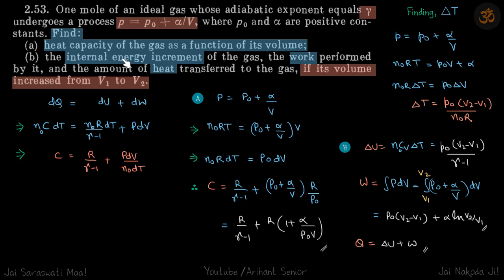Internal energy is a state function, so ΔT will work for us. The change in internal energy is n₀·Cv·ΔT. However, ΔT is not given directly — V1 and V2 are given — so we need to get a relation between temperature and volume to find the change in temperature from the change in volume.